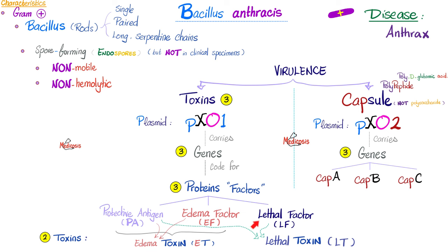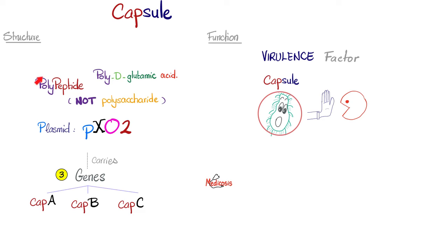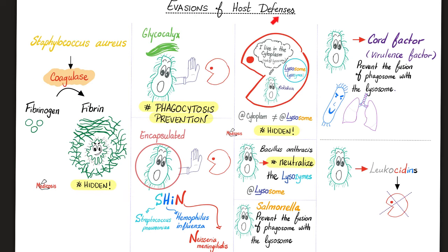Now let's talk about the capsule. It's a polypeptide, not polysaccharide — poly D-glutamic acid. The plasmid is PXO2, carrying three genes: cap A, cap B, and cap C, which code for proteins that make the capsule. The capsule is a virulence factor. It inhibits phagocytosis, protecting the bacteria from your own cells — one of the mechanisms by which bacteria evade the host.